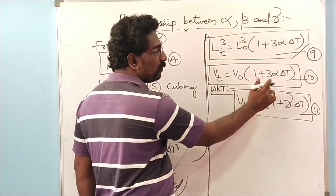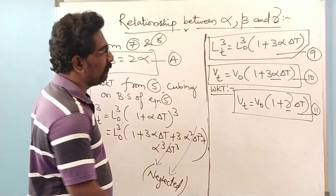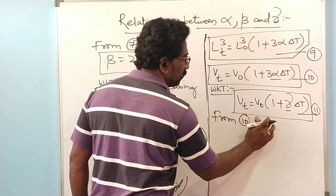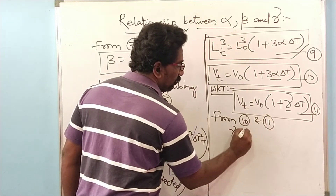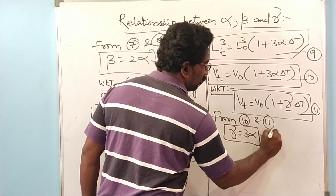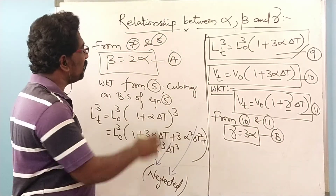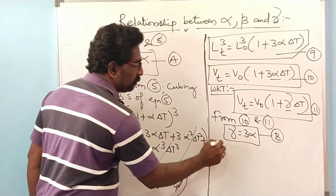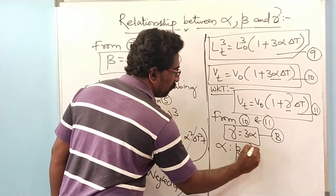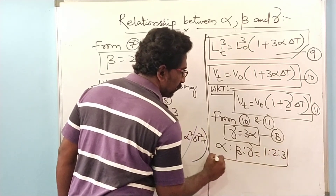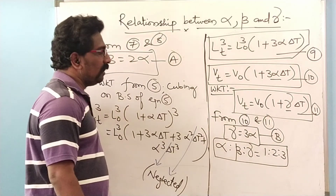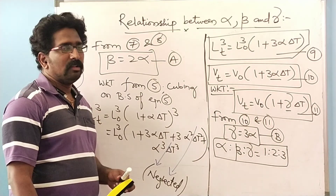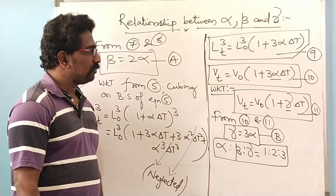From equations 10 and 11, everything is the same except the coefficients, so we conclude that gamma equals 3 alpha. Now from both results — beta equals 2 alpha (equation A) and gamma equals 3 alpha (equation B) — we can write the complete relationship between alpha, beta, and gamma as alpha : beta : gamma equals 1 : 2 : 3. This is the relationship between the three coefficients of thermal expansion.